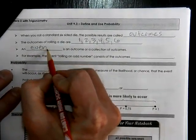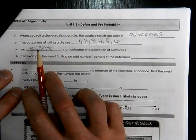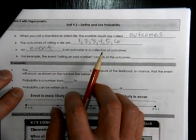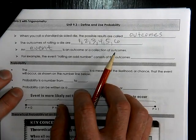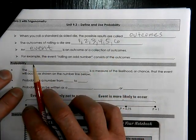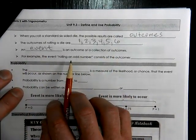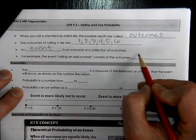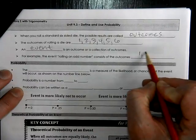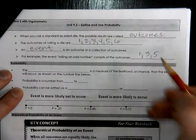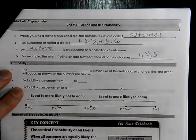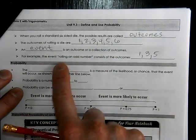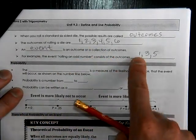An event. When we talk about an event, it is an outcome or a collection of outcomes. For example, the event of rolling an odd number is when you roll a one, a three, or a five. Those are the numbers of rolling this dice that has six possibilities. The odd ones are the numbers one, three, and five.